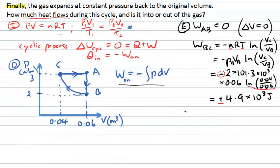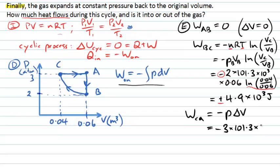The final stage is the work done going from C to A, an isobaric process where pressure doesn't change. The area under that horizontal line is rectangular: work equals minus pressure times the change in volume. The pressure is 3 atmospheres, converted to pascals, and the volume change is 0.06 minus 0.04 = 0.02 m³. That calculation gives −6.1 × 10³ joules. The change in volume is positive, so the work done on the gas is negative.